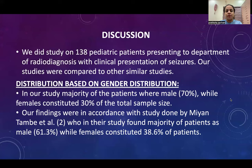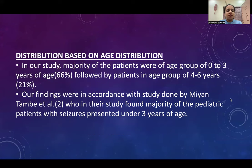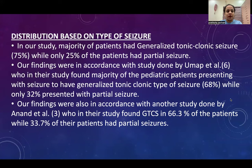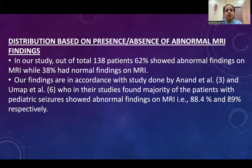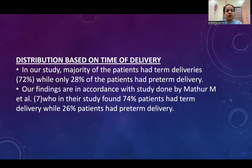Discussion: We performed the study on 138 pediatric patients presenting to the Department of Radiodiagnosis with clinical presentation of seizures. In our study, majority of patients were male, which was in accordance with the study done by Mian Tambe et al. Majority of patients were in the age group 0 to 3 years, followed by 4 to 6 years, in accordance with Mian Tambe et al. Majority presented with GTCS followed by partial seizures, in accordance with Umap et al. and Anand et al. 62% of patients had abnormal MRI findings, in accordance with Anand et al. Majority had term delivery at 72% and 28% had preterm delivery, in accordance with Mian Tambe et al.